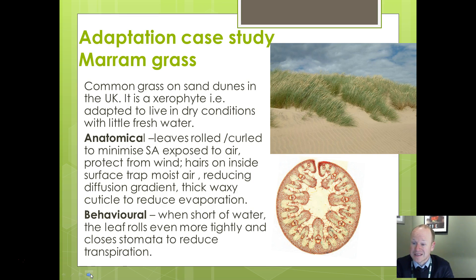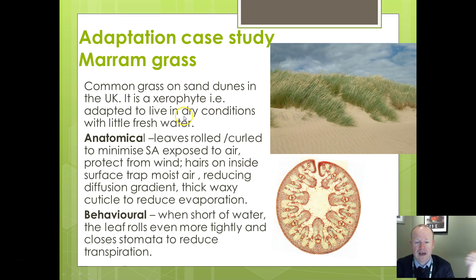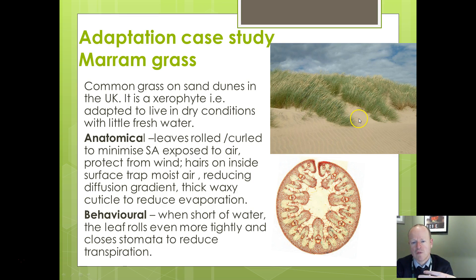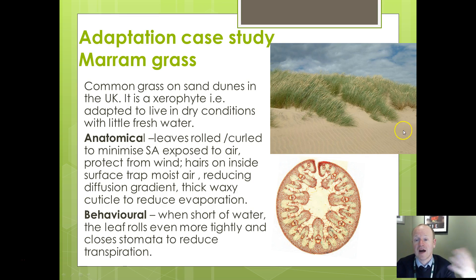Don't forget we can also consider plants — it's not just about animal organisms. One example you could be expected to know is marram grass, a common UK plant found on sand dunes around the coast. It is a xerophyte — adapted to live in dry conditions with little fresh water. It may be exposed to salt water but doesn't necessarily receive much fresh water. The sand is very free-draining, so water drains through it quickly, and the environment is often windy. Marram grass therefore needs adaptations to help it survive these desiccated, desert-like conditions.